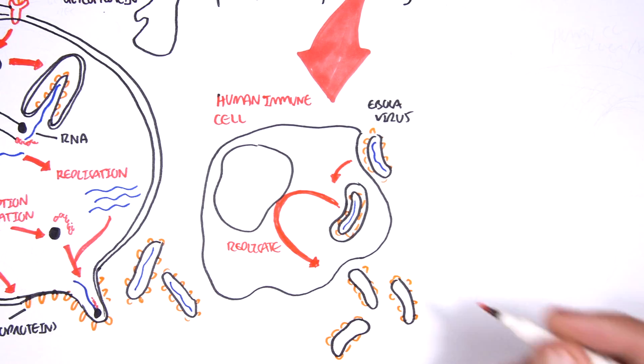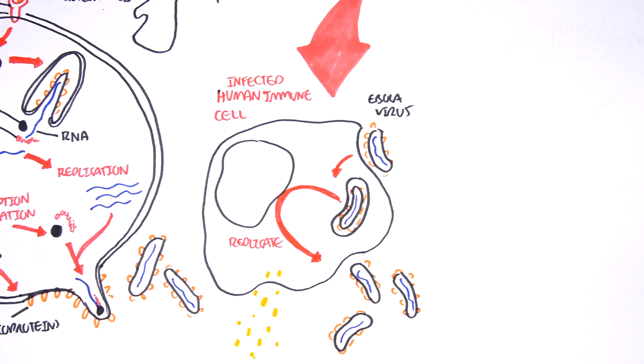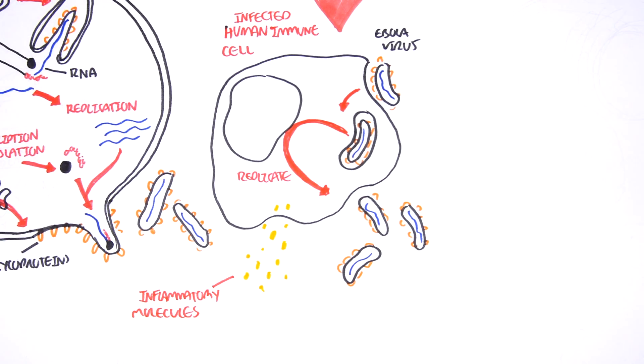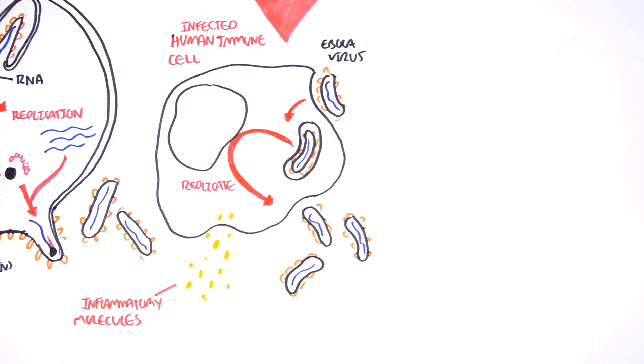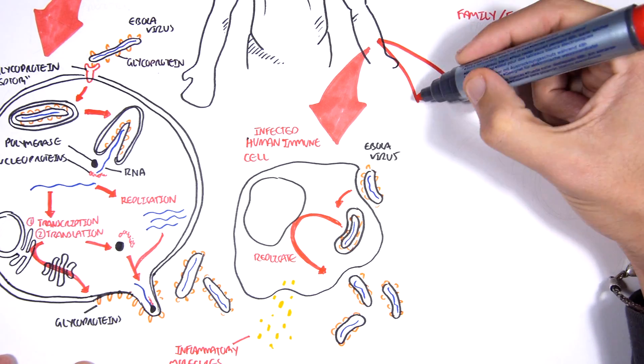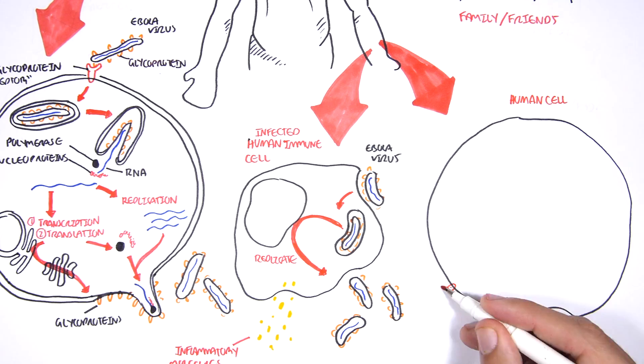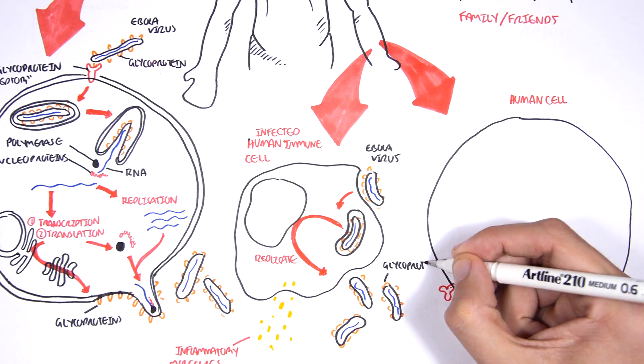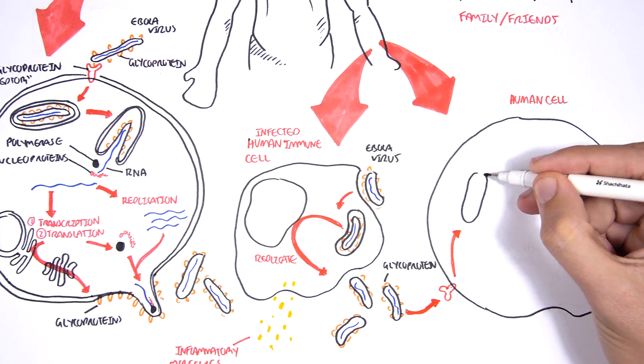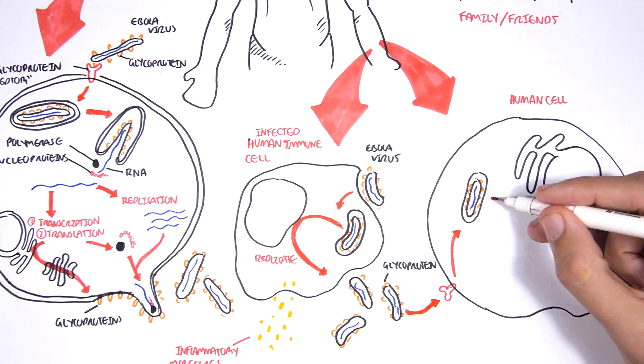The immune cell is now infected and will secrete inflammatory molecules. Inflammatory molecules will cause an inflammatory process. The multiple Ebola viruses can then infect other cells and bind onto glycoprotein receptors, enter the cell, and replicate similar to the replication process within fruit bats.